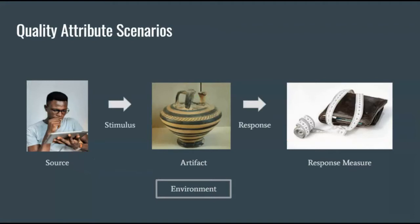Now I will talk about Quality Attribute Scenarios. A Quality Attribute Scenario is an objective format to capture Quality Attributes. They are basically Quality Attributes broken up into six pieces: Source, Stimulus, Artifact, Environment, Response, and Response Measure.